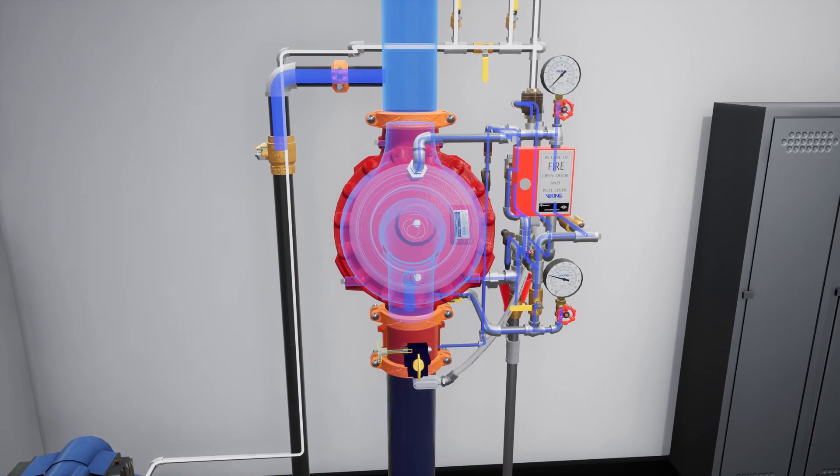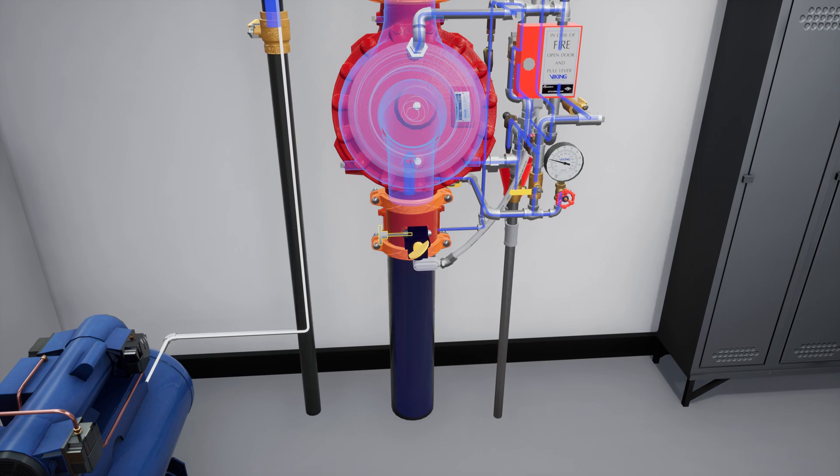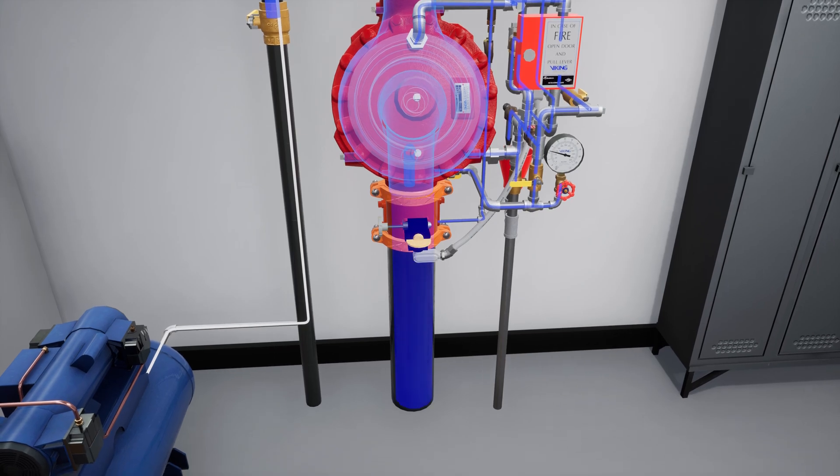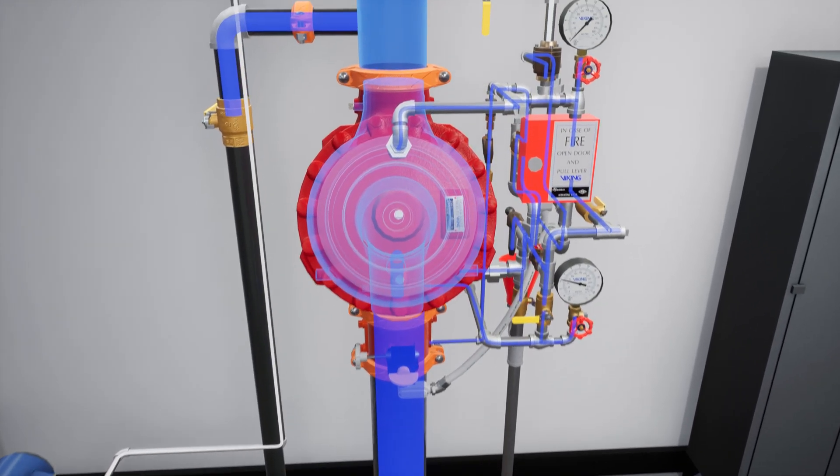Let's start by closing the water supply control valve. Next, close the ball valve below the air maintenance device.